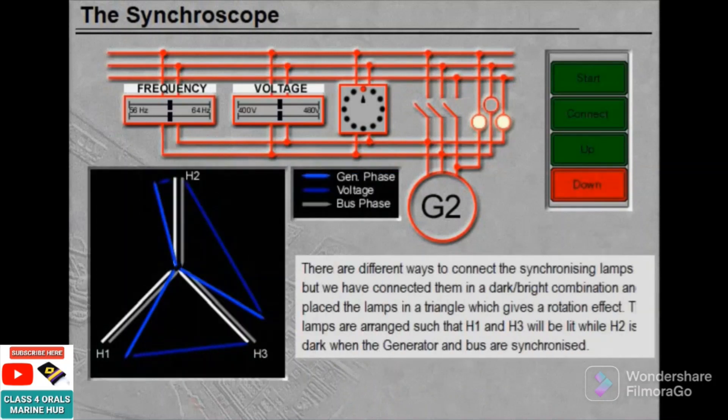There are different ways of connecting the synchronizing lamps, but we have connected them in a dark bright combination and placed the lamps in a triangle which gives a rotation effect. The lamps are arranged so that H1 and H3 will be lit while H2 is dark when the generator and bus are synchronized.